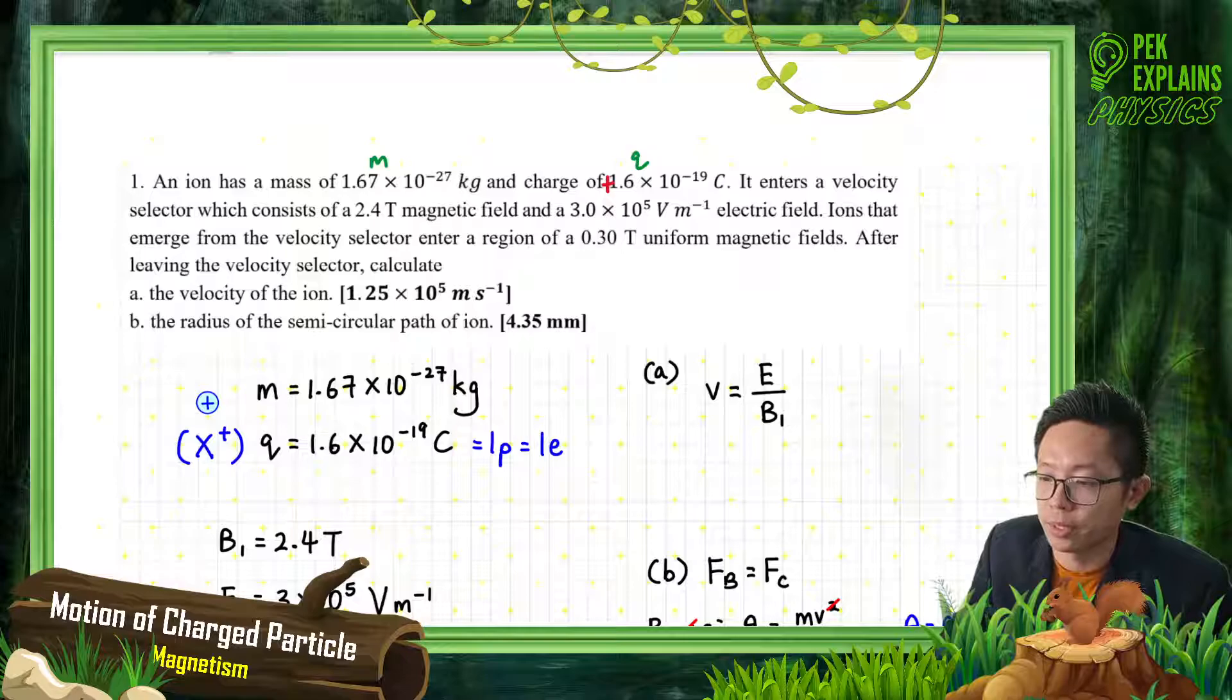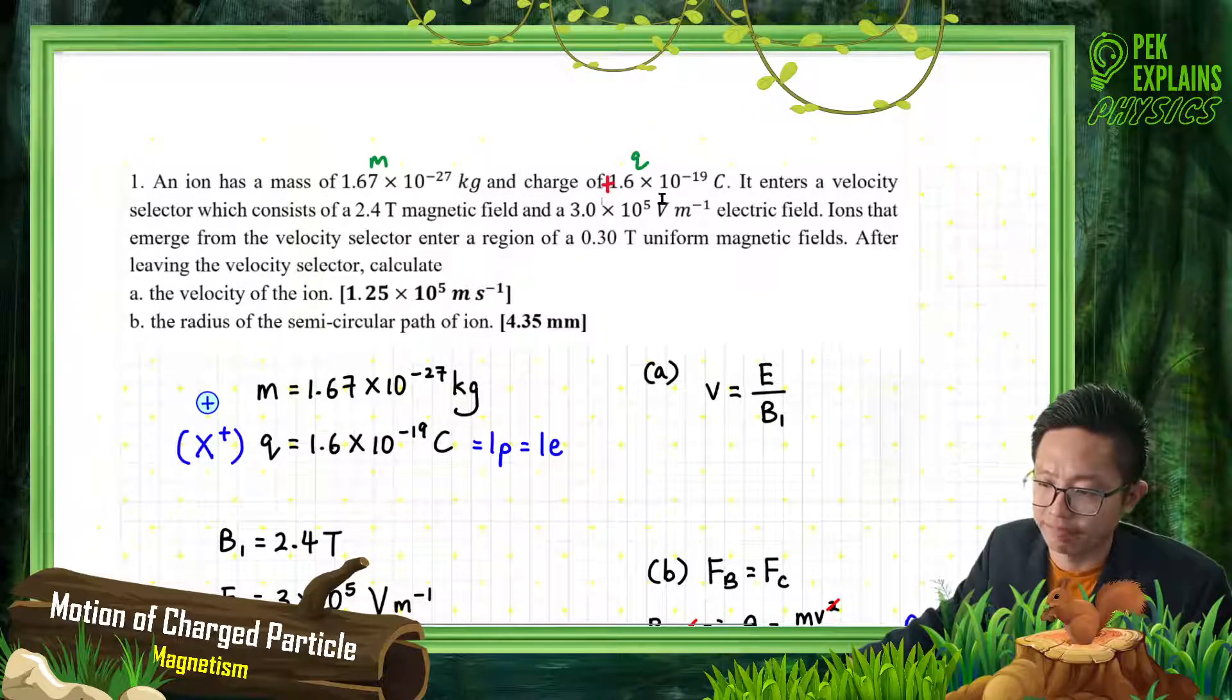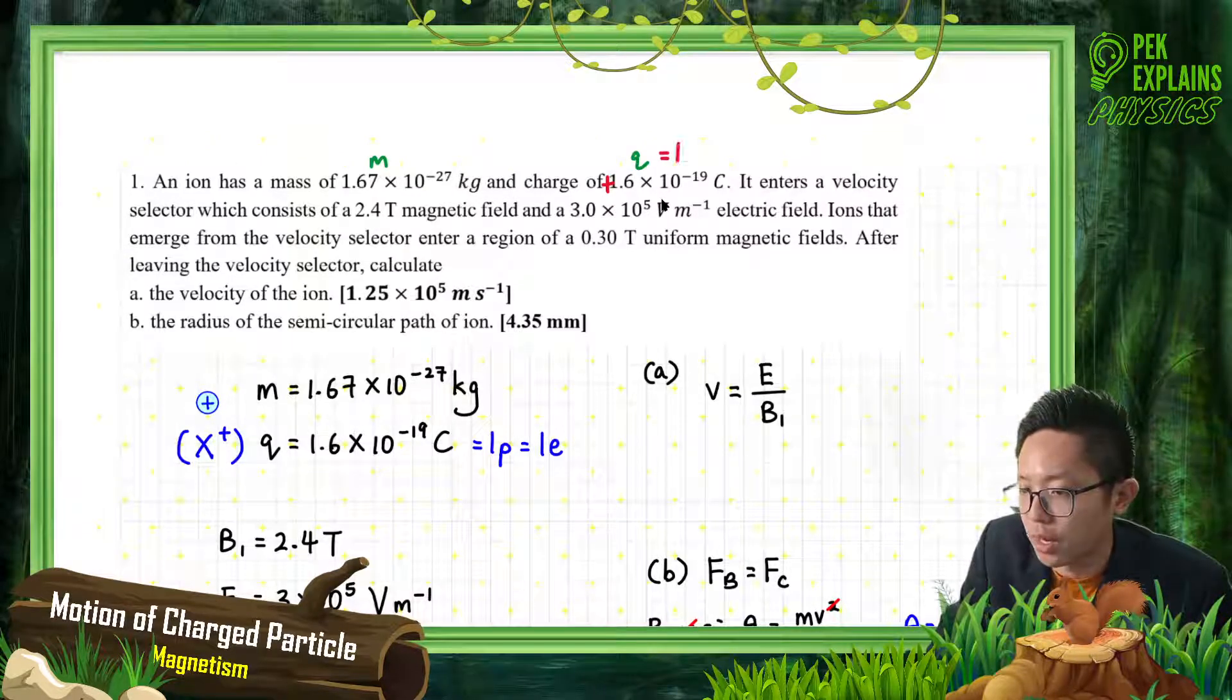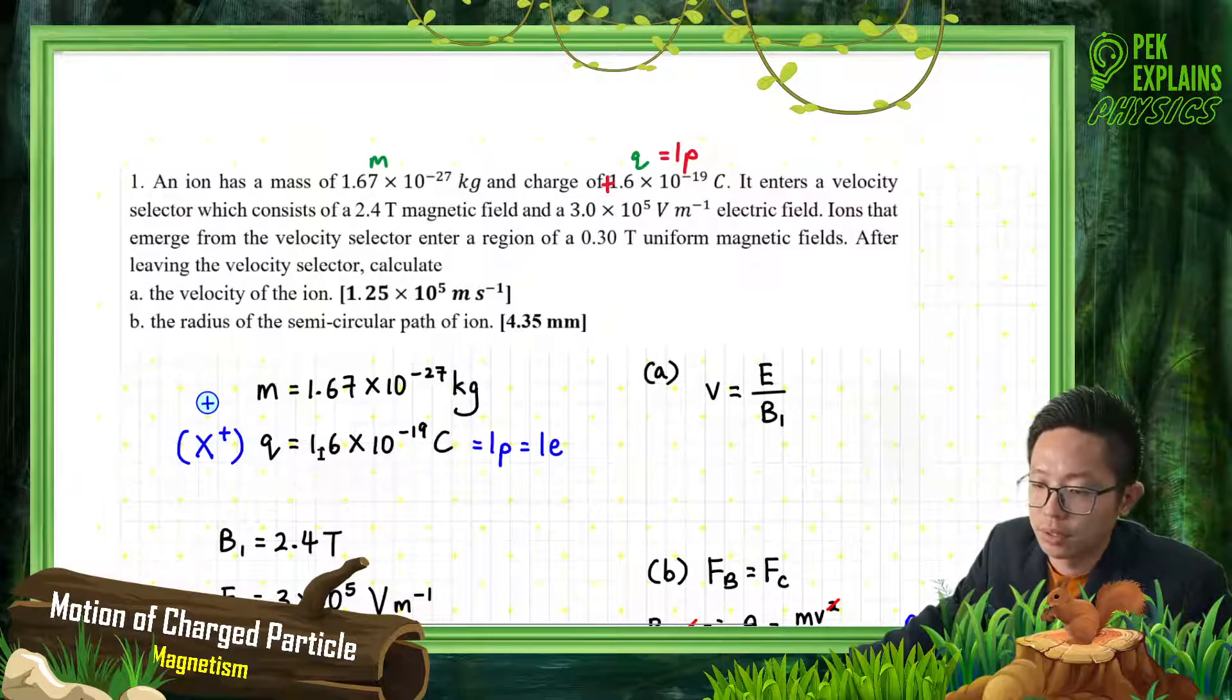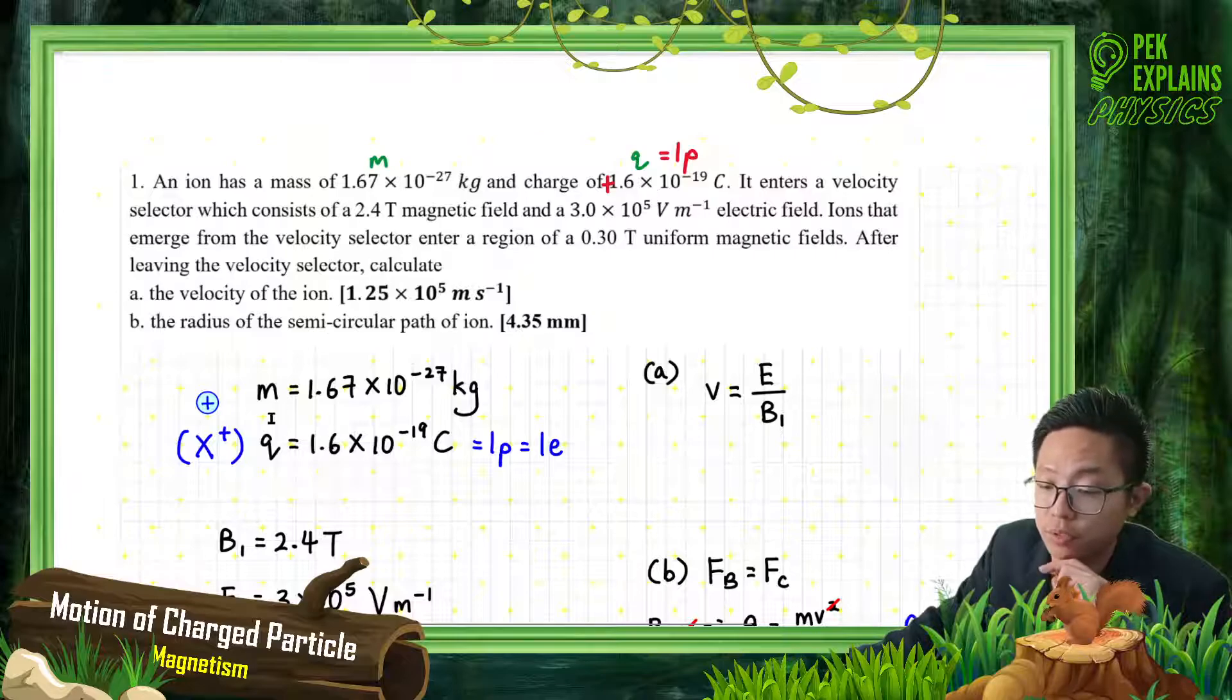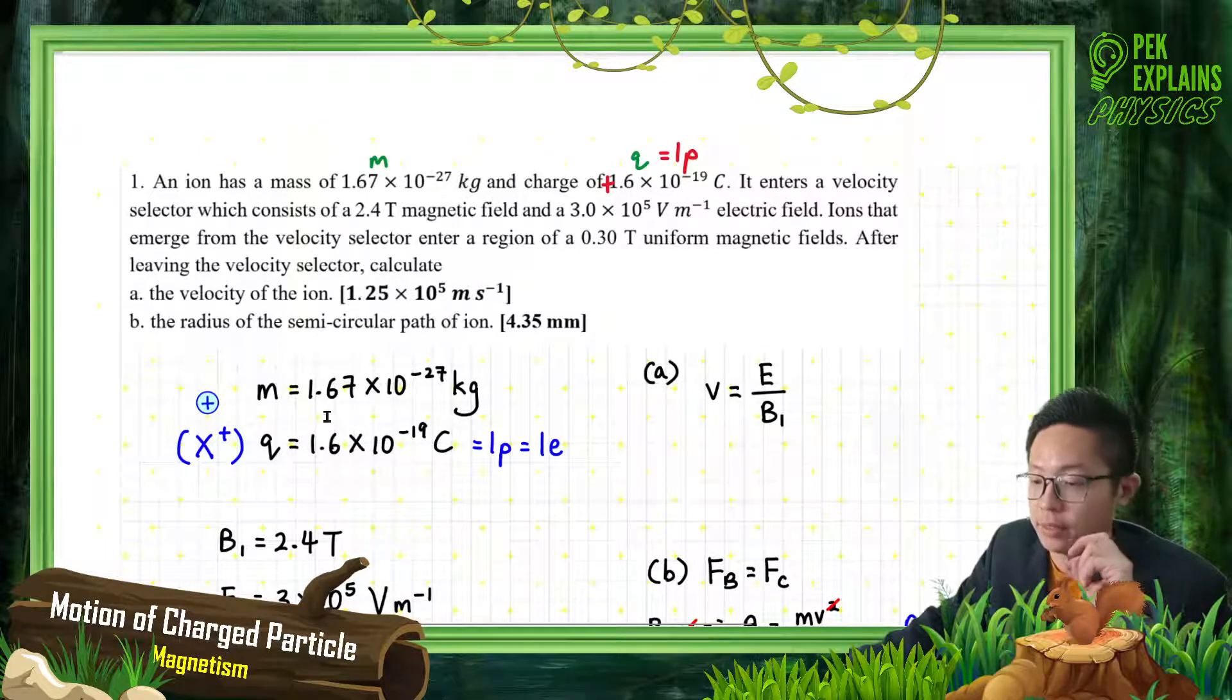This ion, we don't know what ion, just put X. It has a charge of one proton. This is a positive charge, 1.6×10^-19 coulomb. This is actually charge of one electron which is also proton, charge of one proton. So it's only one positive charge, not two positive.